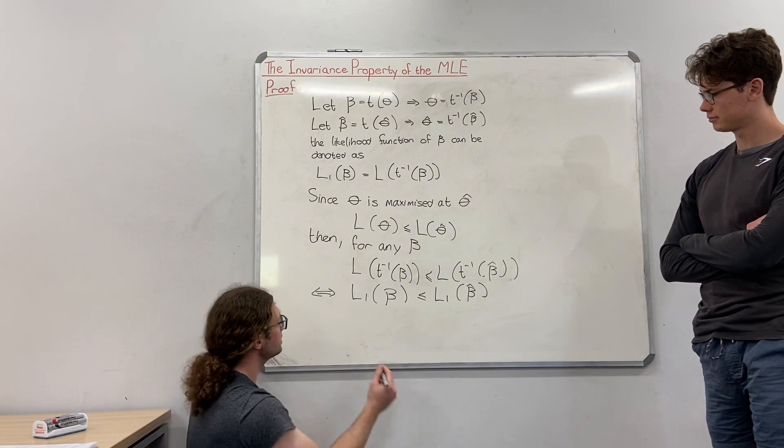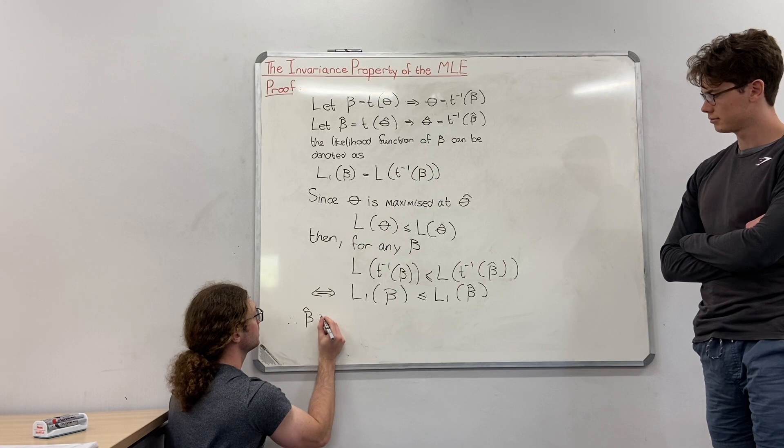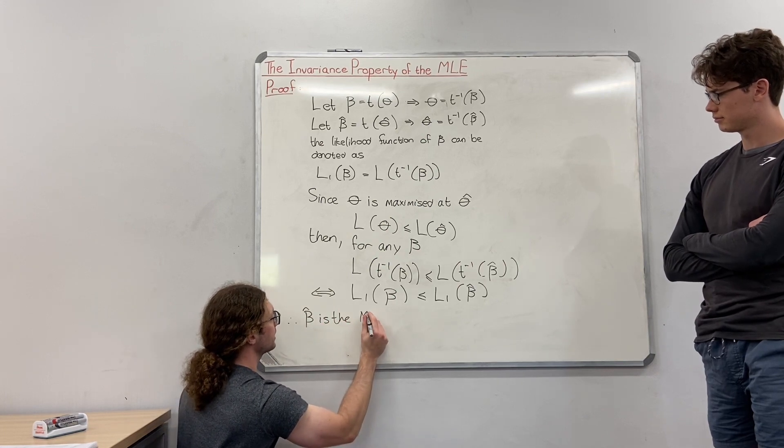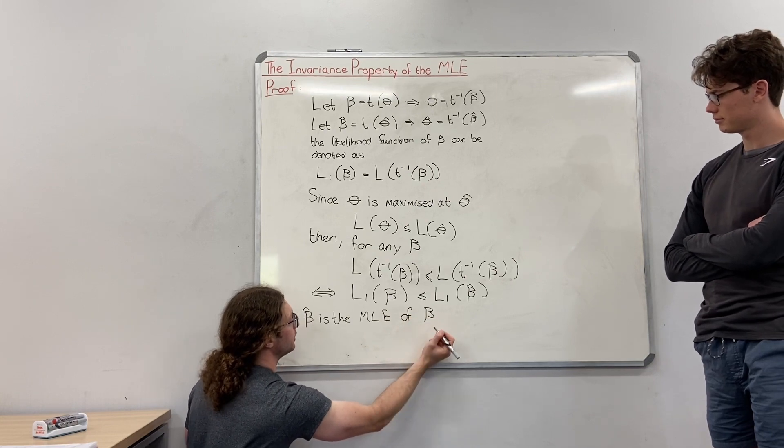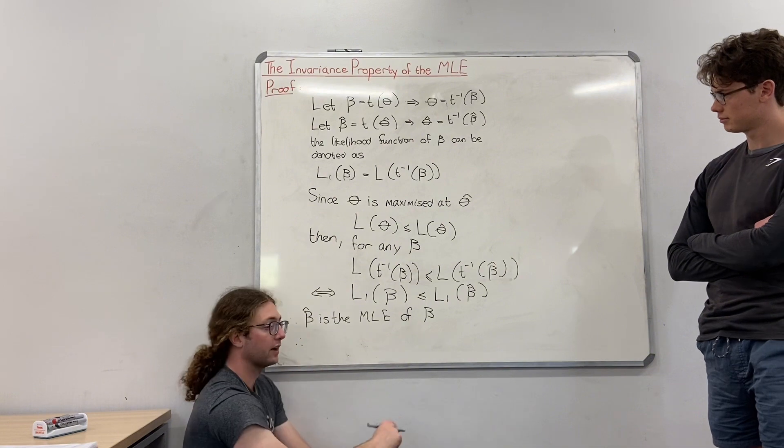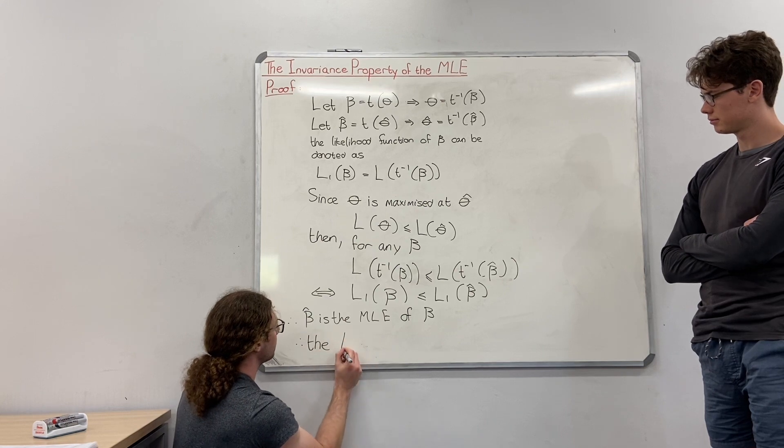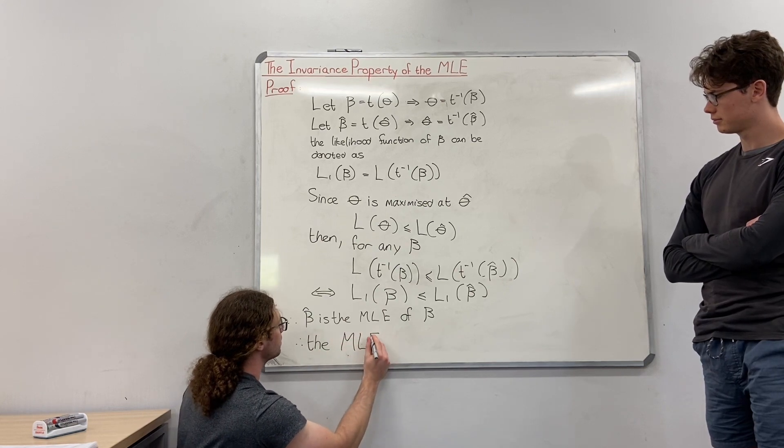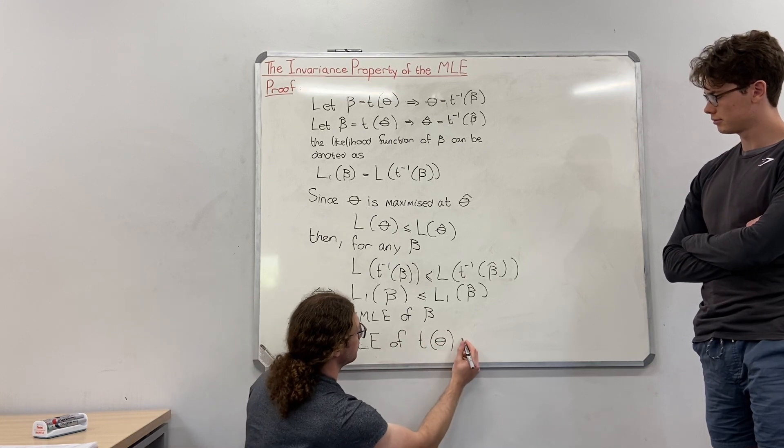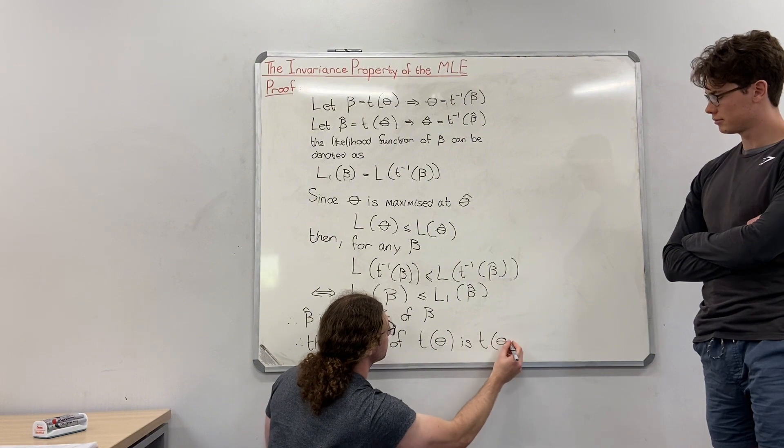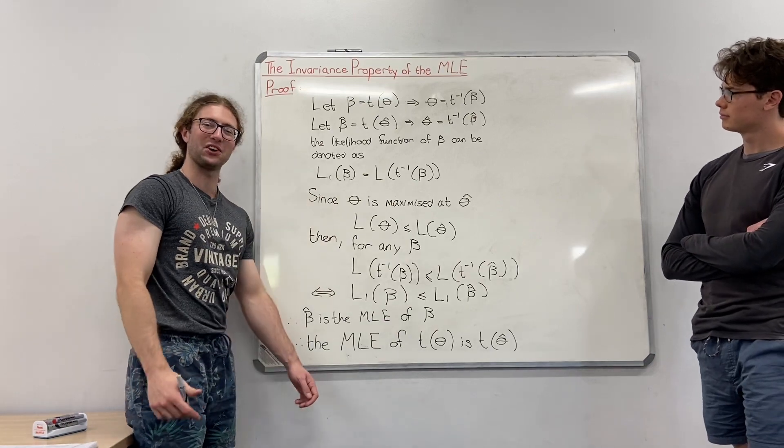Which then implies, therefore, beta hat is the maximum likelihood estimator of beta, t inverse beta. Therefore you have to state this second conclusion. The MLE of t theta is t theta hat. And thus you have proved the invariance property of the MLE.